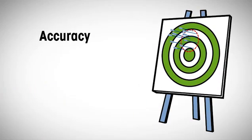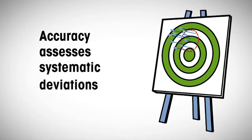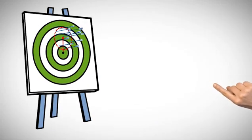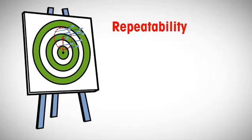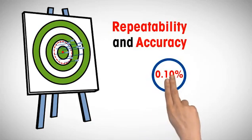Accuracy, on the other hand, assesses systematic deviations, or in other words, the trueness of measurements, how close they are to the true value. To weigh reliably, both repeatability and accuracy must meet the defined tolerance of 0.10%.